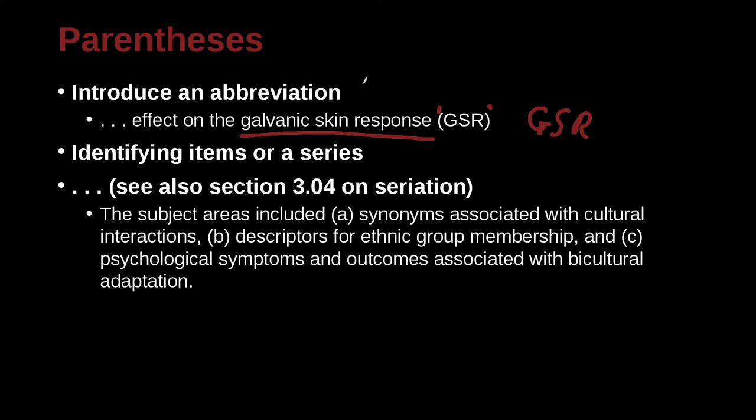So in a series, for example, the subject areas included A, comma B, comma C. So this is a series. And how do we separate the series? Well, of course, we use the comma, as we've already studied. And for the last one, we use the conjunction and with a comma. But we also use the parentheses to enclose this 1, 2, 3 idea. And it could be 1, 2, 3, ABC or anything like this. And remember, you need to have a space after and a space before.